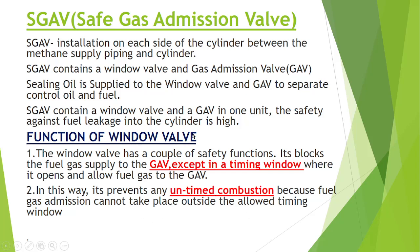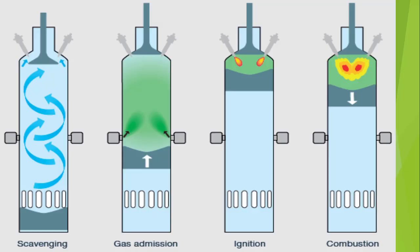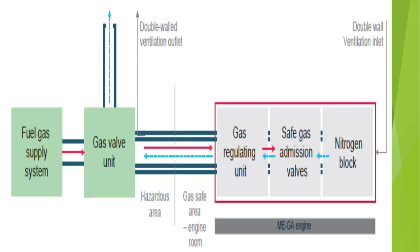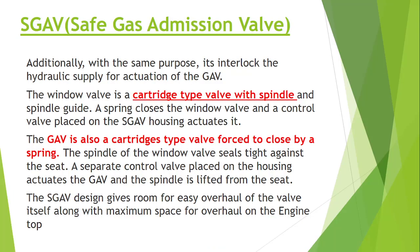This is the advantage of the window valve and the reason it is called 'safe.' It prevents any untimed combustion because fuel gas admission cannot take place outside the allowed timing window. So if asked why it is called safe, the answer is: the window valve prevents untimed combustion by restricting gas injection strictly to the permitted timing window.